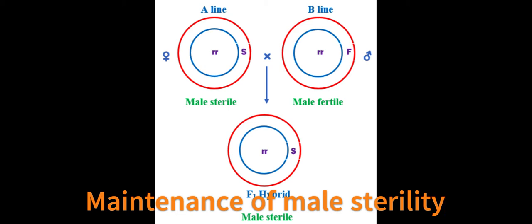The isogenic male fertile B line serves as the pollinator to provide the functional pollen for fertilization. The F1 plants will be male sterile due to the presence of the male sterile cytoplasm.